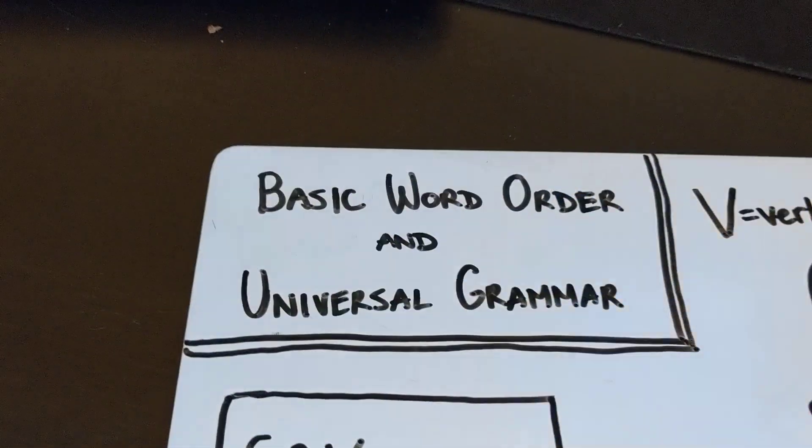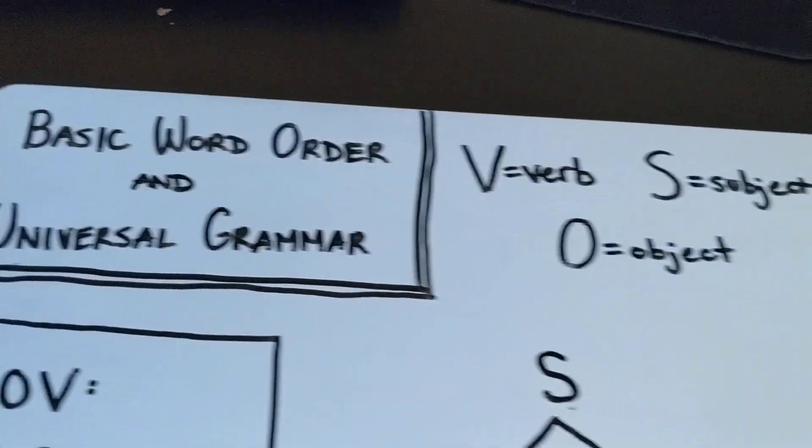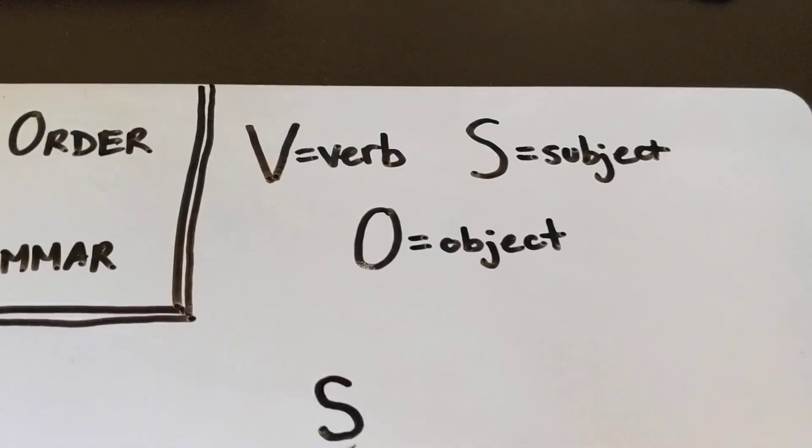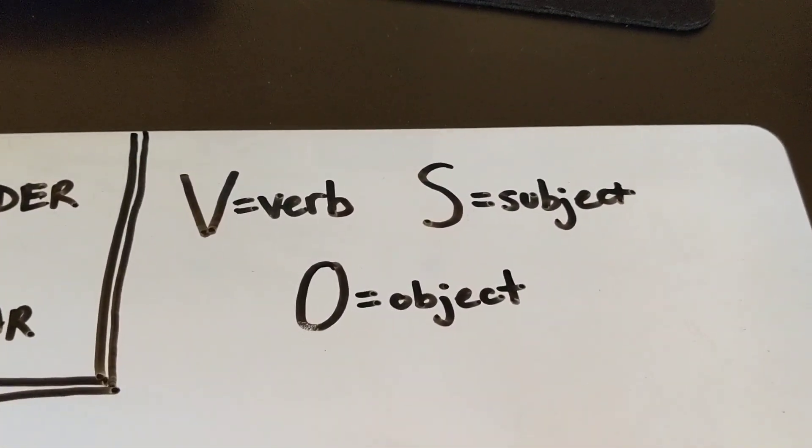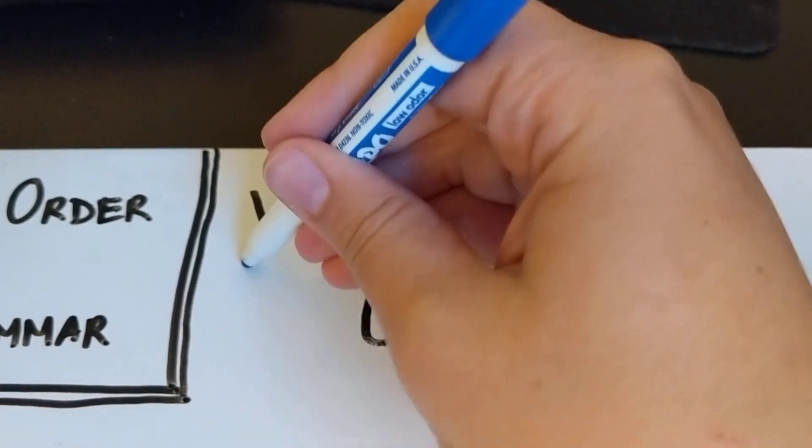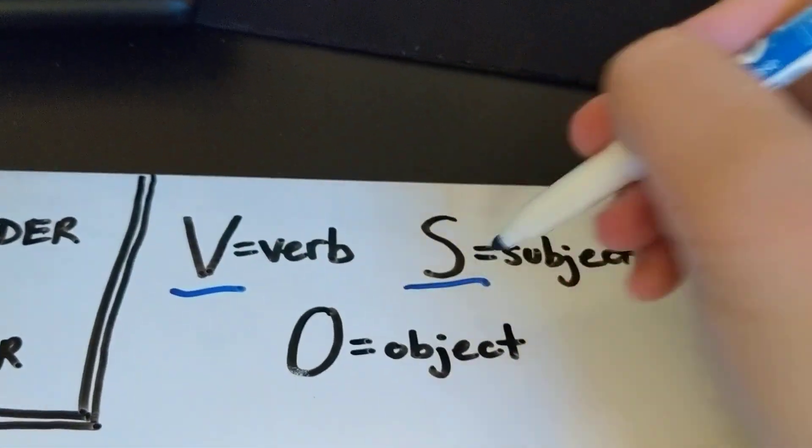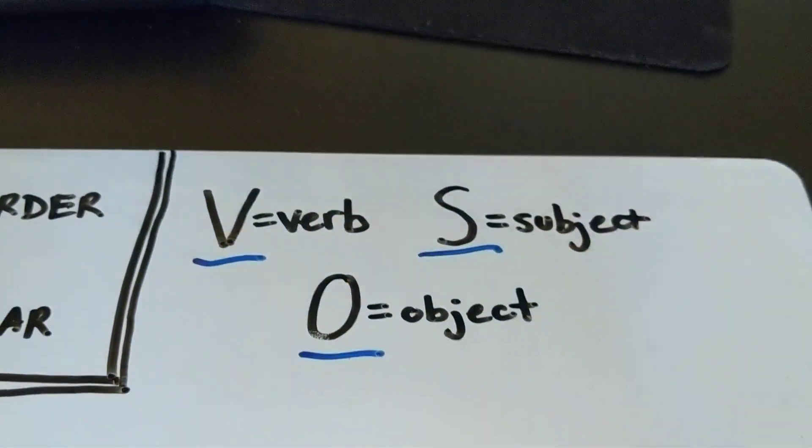So when we talk about the basic word order of a language, we're talking about these three units. We're talking about the verb, the subject, and the object, which we mark as V for verb, S for subject, and O for object.